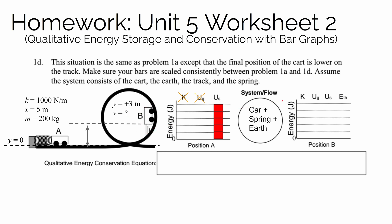At position B the car is moving, so it has kinetic energy. It's also higher above a height of zero, so there's energy in the gravitational potential energy account. We assume the spring is no longer compressed, so there's no spring potential energy. Assuming no significant friction, there's no thermal energy. If we started with five bars of energy in the spring potential energy account, that energy splits between kinetic and gravitational potential energy. This lets us write our energy conservation equation: the spring potential energy at position A equals the sum of kinetic and gravitational potential energy at position B.